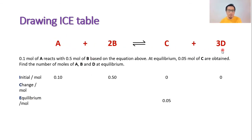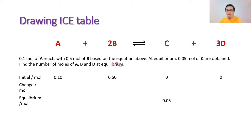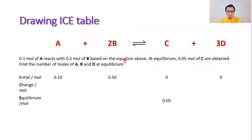The equation is normally given to you. In this case, A reacting with 2B gives C plus 3D. The question reads: you're given 0.1 moles of A which will react with 0.5 moles of B based on the equation above, and at equilibrium 0.05 moles of C are obtained. You're required to calculate the number of moles of A, B, and D at equilibrium. What you need to do is put all the information given in the question into your ICE table.